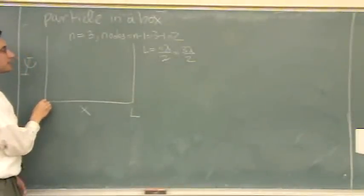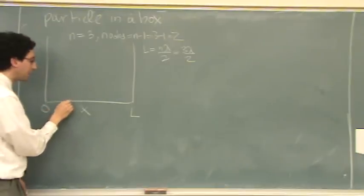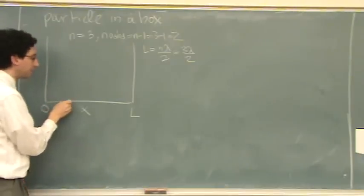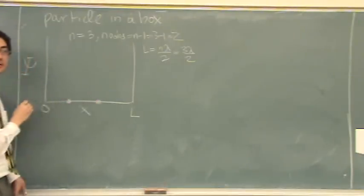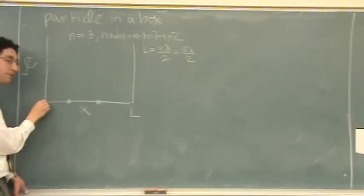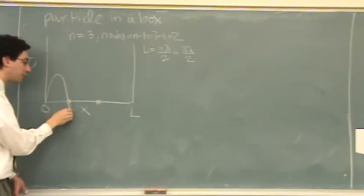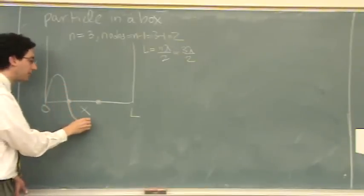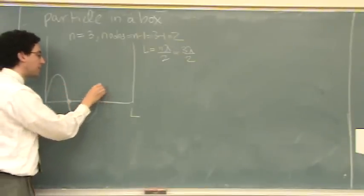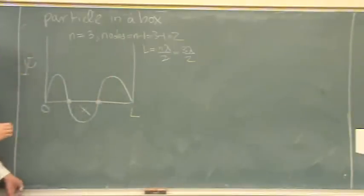Let's see how this looks. The way I do this, I draw the nodes first — there's two, equally distributed. You always start up, then go through the node, go down, through the next node, go up, and then at the other side of the box. There's the wave function.